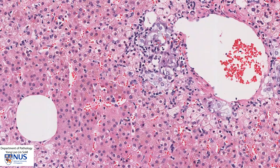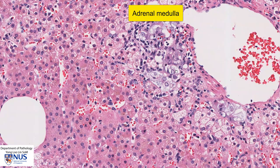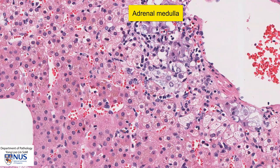Coming to the central area of the adrenal gland, this is the adrenal medulla. The cells here are quite large and polygonal, and they have this bluish or basophilic tinge to the cytoplasm. Tumours that arise from the adrenal medulla are known as phaeochromocytomas.